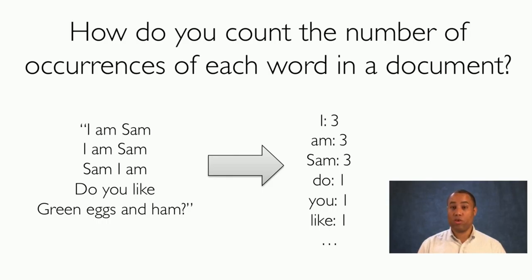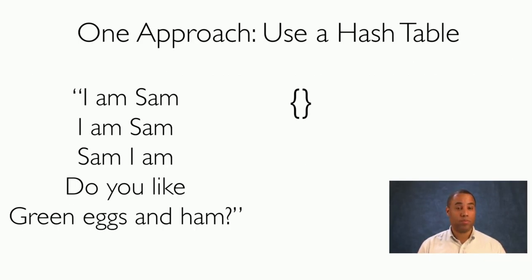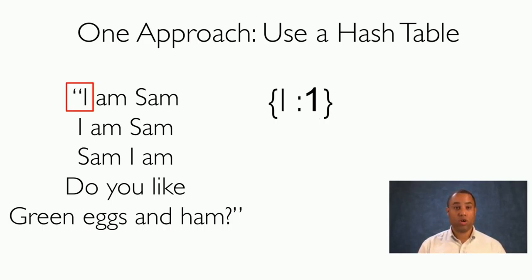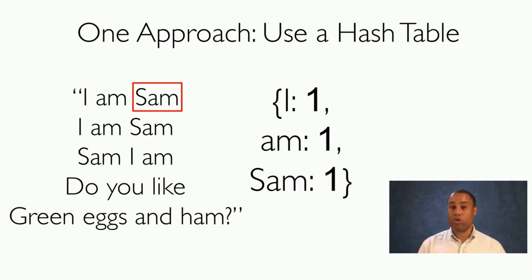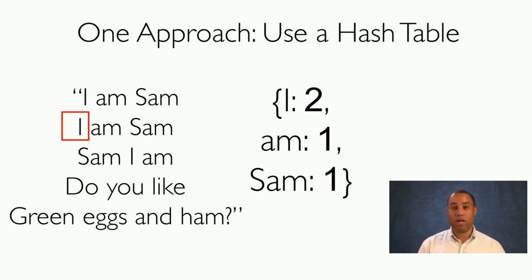We'd like to count the words — for example, there are three occurrences of I, three of am, three of Sam, and one each of do, you, like, and so on. One approach is to use a hash table. We start with an empty hash table and look at each word. I doesn't appear, so we add it with one occurrence. Am does not occur, so we add it with one occurrence. Sam is not in the table, so we add Sam with one occurrence. Then we see I again — it appears already — so we update the value to two. We keep doing this for each word in the document.